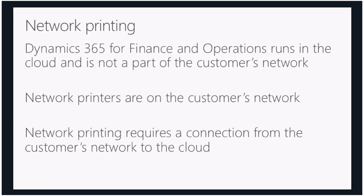For network printing, printers are still on the customer's network. In order to avoid files on the user's computer, there needs to be a way for Finance and Operations in the cloud to communicate with the customer's network, even though they don't really know about each other. The document routing agent sits in between — it runs on a computer on the customer's network, has a login to the cloud, takes what you want to print from the cloud, and sends it to the printer.